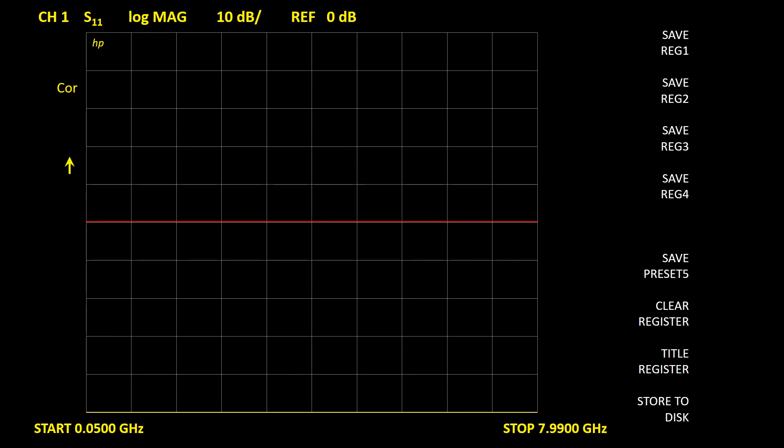After the calibration, the instrument displays the soft keys of the Save menu. We can save the calibration coefficients in one of the registries. We only need to choose one of them. If we choose registry 5, the instrument state and calibration data will be automatically recalled during power on or after pressing the Preset key. Now we are ready to measure.